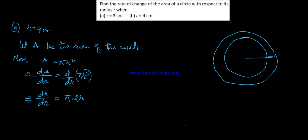dA by dR means — the radius is the same as the rate of change.